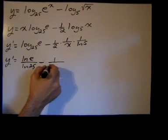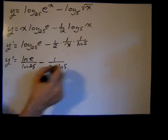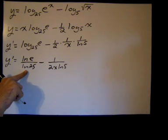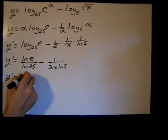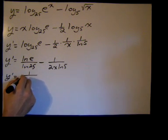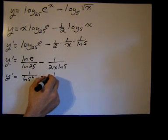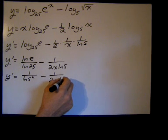Minus 1 over 2x natural log of 5. Natural log of e is 1. The natural log of 25 is the natural log of 5 squared. So I got 1 over the natural log of 5 squared, minus 1 over 2x natural log of 5.